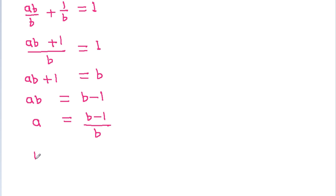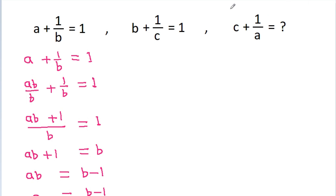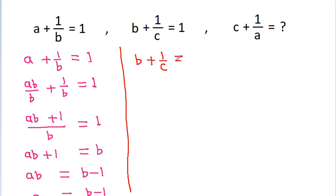So 1 by a will be equal to b by b minus 1. And we have b plus 1 by c is equal to 1.